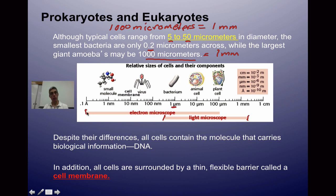With an electron microscope you have a much better range — you can see large cells like plants and animals, but also some of the smallest molecules. So electron microscopes allow you to see a wide variety of things.